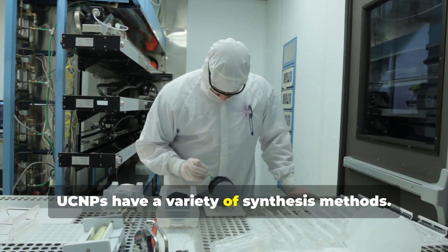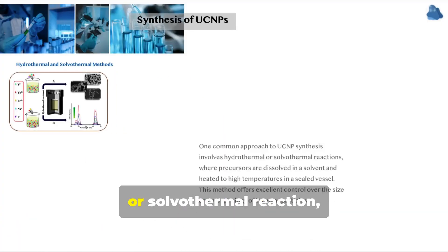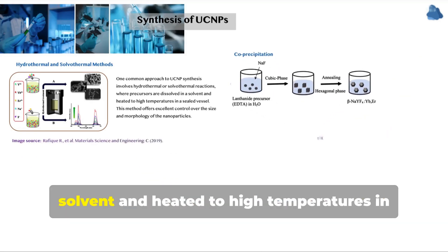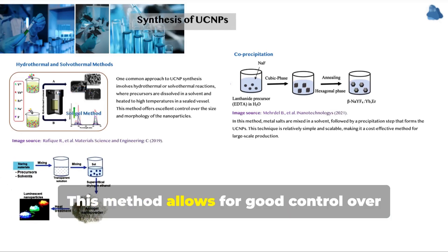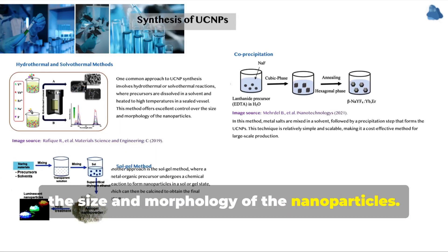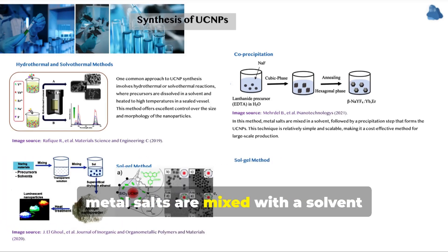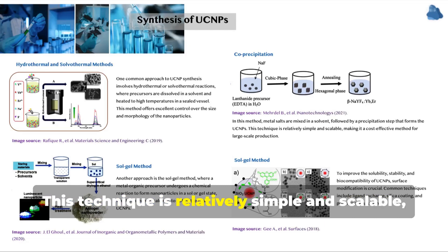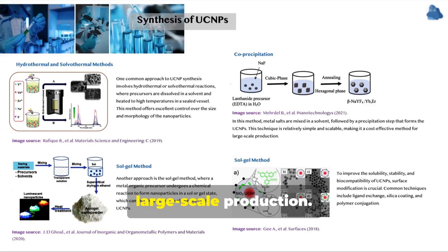UCNPs have a variety of synthesis methods. One common method involves a hydrothermal or solvothermal reaction, where the precursors are dissolved in a solvent and heated to high temperatures in a sealed container. This method allows for good control over the size and morphology of the nanoparticles. In the co-precipitation method, metal salts are mixed with a solvent followed by a precipitation step to form UCNPs. This technique is relatively simple and scalable, making it a cost-effective method for large-scale production.